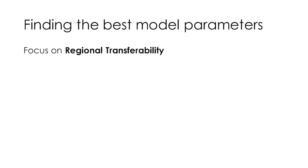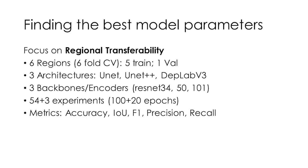For the technical model details: we focused on regional transferability, as this is paramount for mapping thaw slumps across large Arctic regions. We used a six-fold cross-validation on a spatial basis — five regions for training, one for validation, rotating through all regions. Our workflow is flexible enough to use different architectures, backbones, and loss functions. For testing we chose three successful architectures: U-Net, U-Net++, and DeepLab v3. We used different encoders based on ResNet — ResNet 34, 50, and 101 — and in total performed 54 experiments.